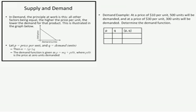Basically, the principle at work is this. If we talk about demand for a certain product, taking all other factors being equal, we're saying that the higher a unit price, the lower the demand for that product. As everybody well knows, if we start trying to increase the price of loaves of bread, a certain kind of bread, maybe somebody will go to a competitor, and the demand for that particular unit will decrease. In this graph, you can see that every time the price goes up, the demand goes down, and every time the unit price comes down, the demand increases.